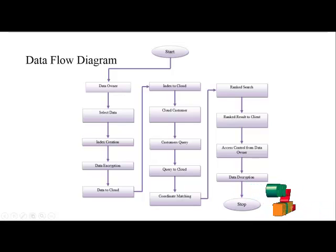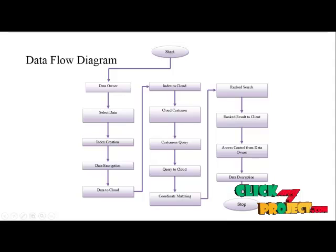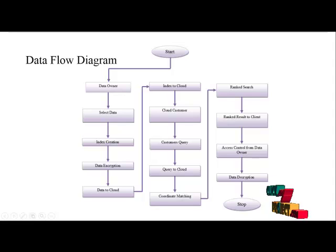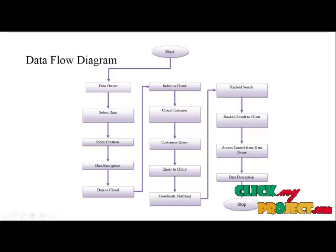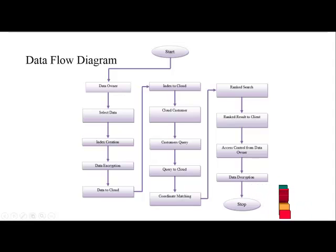After sending the queries into the cloud, the coordinates will be matched and checked — the index of the key and the query. The data will be converted into an index, and after checking, the index will be sent to the cloud. The data owner controls the submission, then the client decrypts the file and views the original content of the owner data, then stops the program.